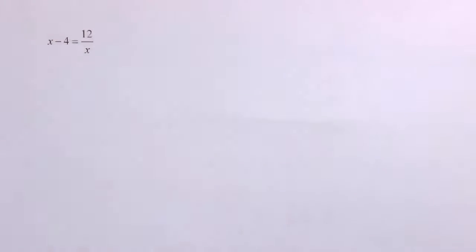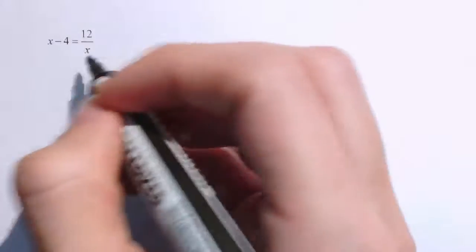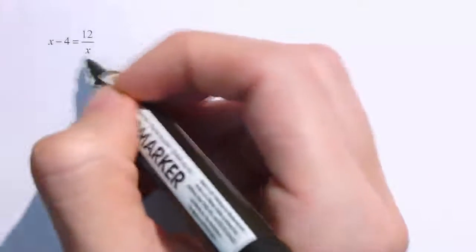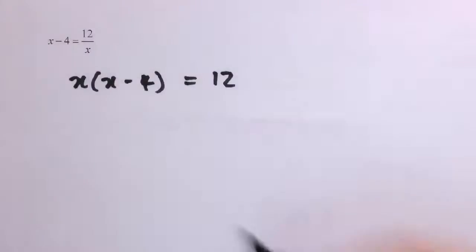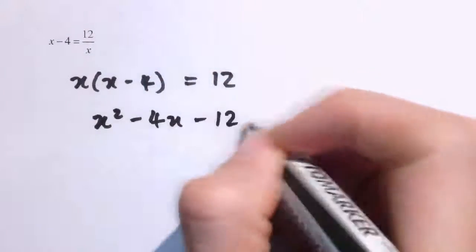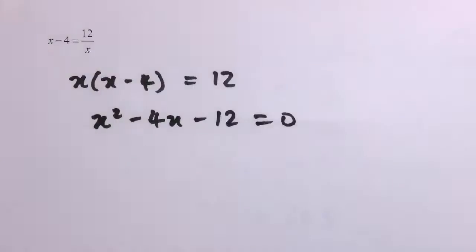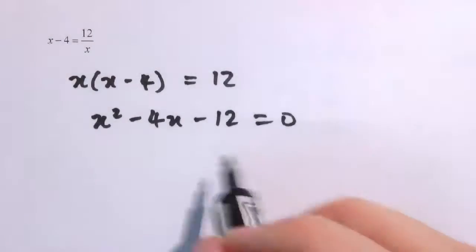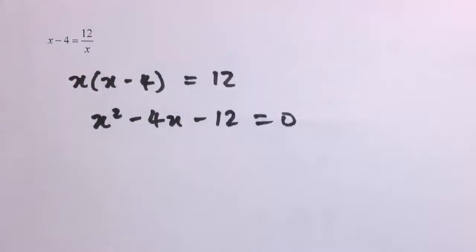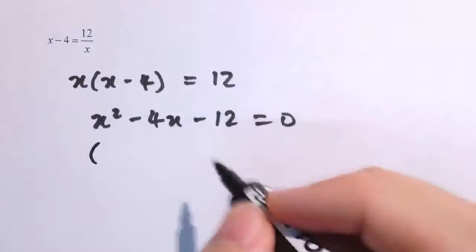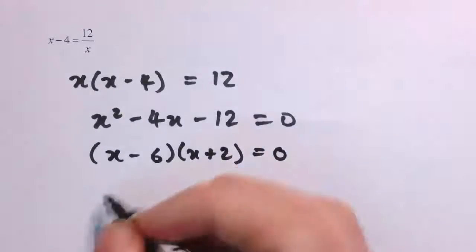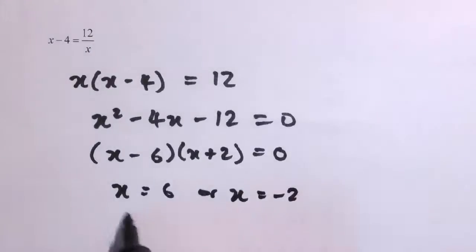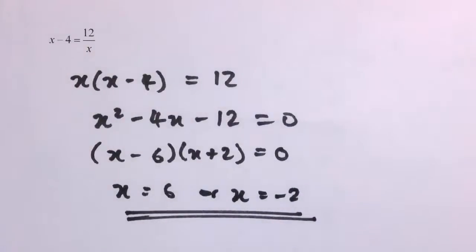This next example might look simpler but is complicated in a different way. Multiplying by x on both sides gives x times (x minus 4) equals 12. Expanding gives x squared minus 4x minus 12 equals 0 — a quadratic equation. This factorises as (x minus 6)(x plus 2) equals 0, so x equals 6 or x equals minus 2. I won't go into detail about solving quadratics here, but you can look up other videos on that topic.